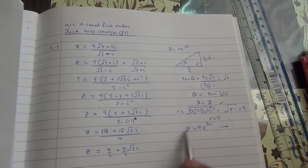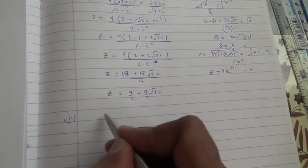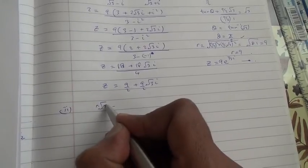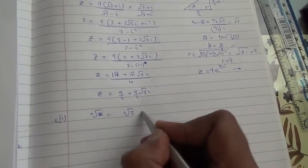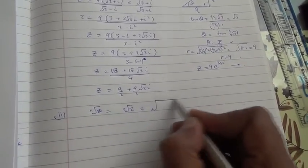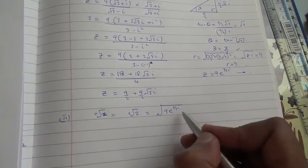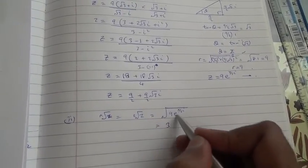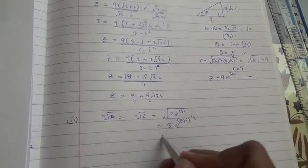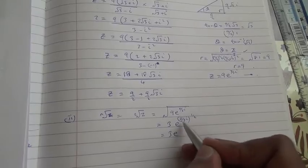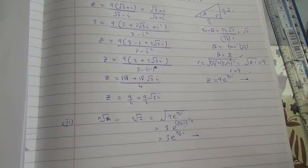Now for the second part, we need to find the 2 square roots of z. The first square root of z, so nth root of z, basically we are looking for the square root of z. Okay, so what is the square root of z? It's going to be the square root of what we just found, 9e to the power of π upon 3i. Okay, so the square root of 9 is 3, the square root of e^(π/3i) to the power of half, so that becomes 3e to the power of π upon 3 times half is π upon 6i. So this is the first square root.